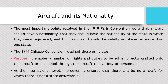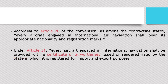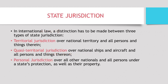Who should be made answerable would depend on the aircraft and its nationality. Two important articles deal with aircraft rules. Article 20 of the Chicago Convention states that every aircraft engaged in international air navigation shall bear its appropriate nationality and registration marks. Article 31 provides that every aircraft engaged in international navigation shall be provided with a certificate of airworthiness issued or rendered valid by the state in which it is registered.